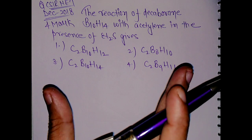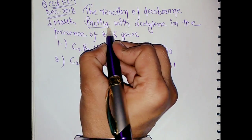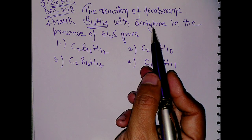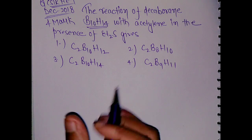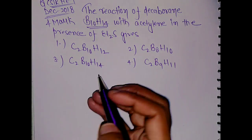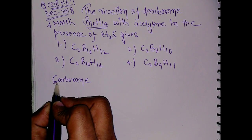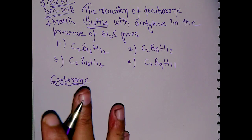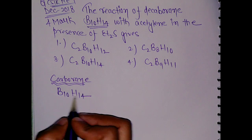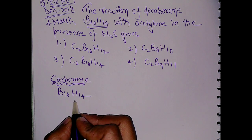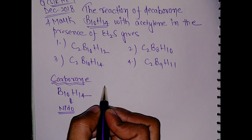Let's stick to the basics and solution of this question. In the question, the reaction of decaborane B₁₀H₁₄ with acetylene in the presence of R₂S (where R is an ethyl group) is given. This is a reaction mechanism, so let me write the substrate B₁₀H₁₄. This is a carborane system and the mechanism will be the same for other carboranes as well. The structure of B₁₀H₁₄ is a nido structure.